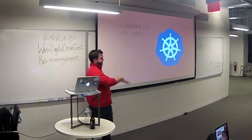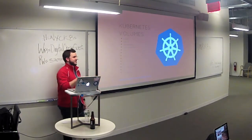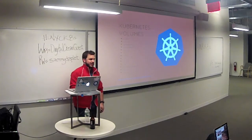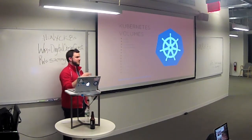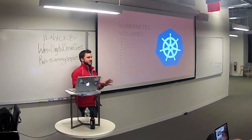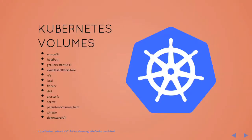Kubernetes has also done a really good job allowing you to plug into these storage layers. Here are all the options in the documentation today: emptyDir, hostPath, GCE, AWS, NFS protocol, iSCSI, Flocker, RBD from Ceph cluster, and a number of other ones.